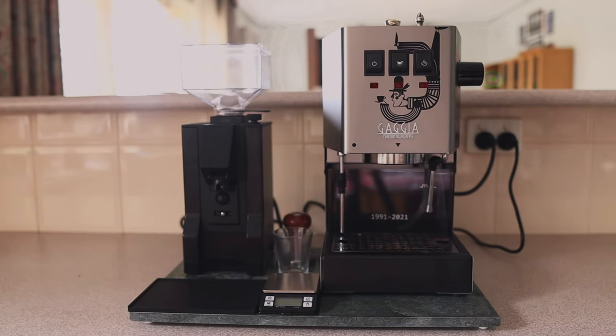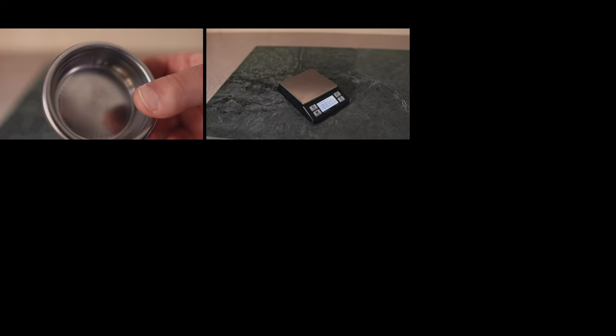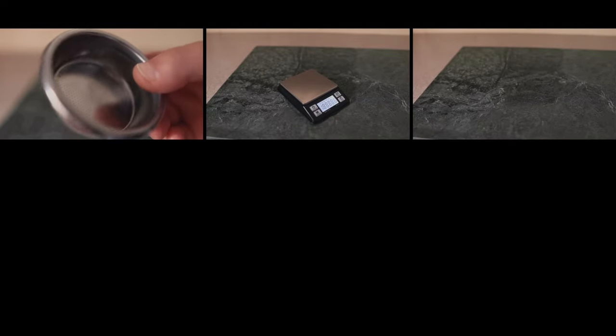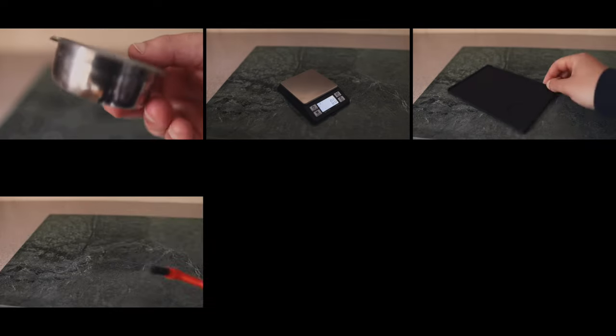Accompanying these choices for machines, this setup features an 18 gram VST precision filter basket, a dosing scale which scales to the tenth of a gram, a flat tamping mat, a group head cleaning brush, a tamper and a blind filter for back flushing.